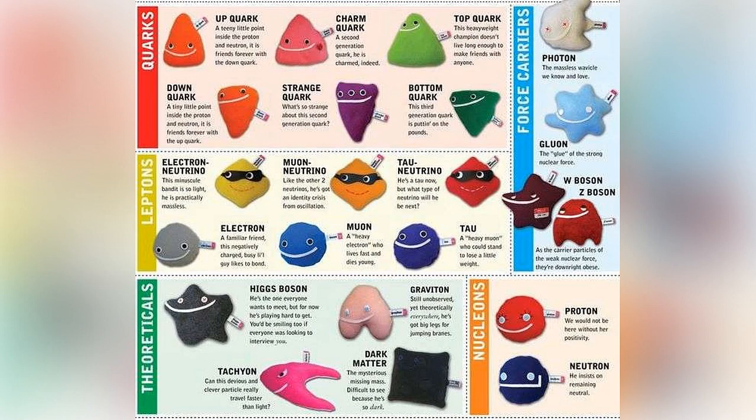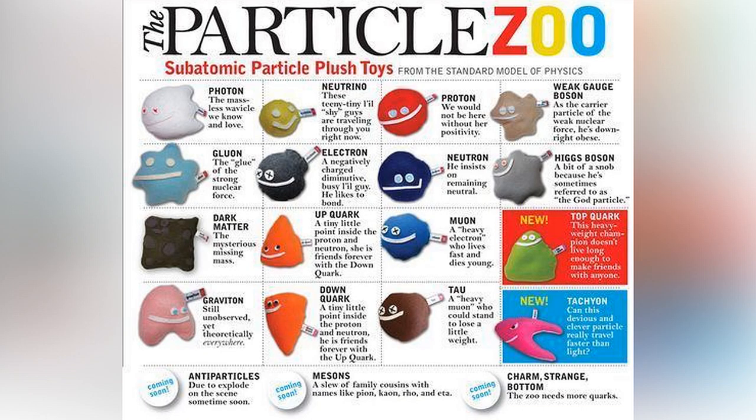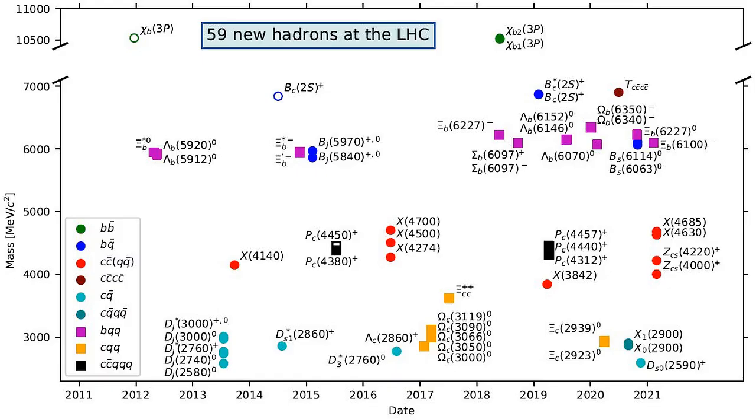We are witnessing a period of discovery similar to the 1950s when a particle zoo of hadrons started being discovered and ultimately led to the quark model of conventional hadrons in the 1960s. We are creating particle zoo version 2.0.